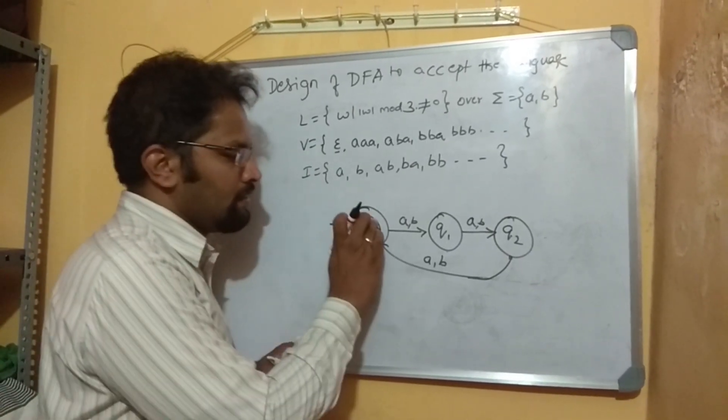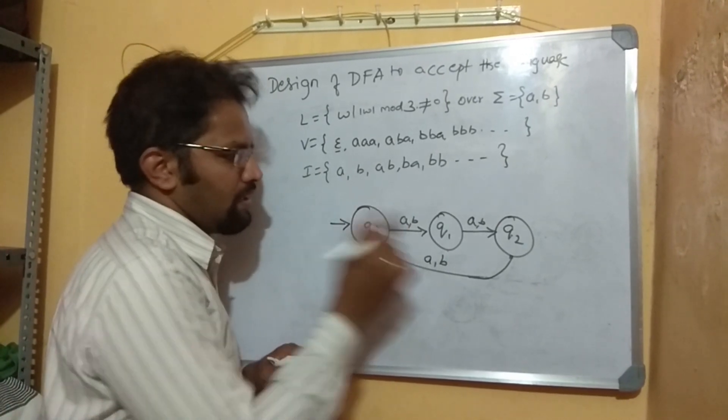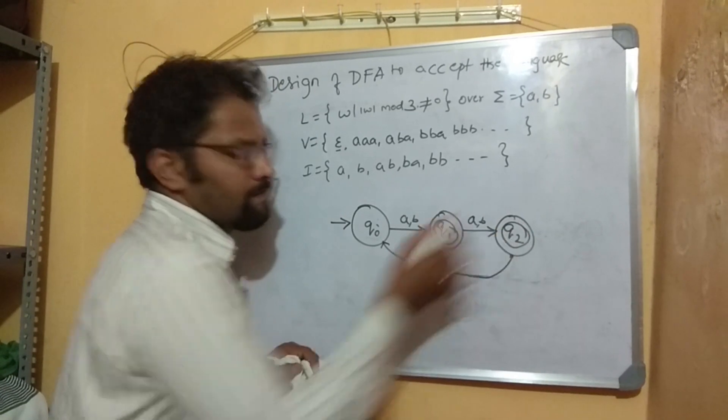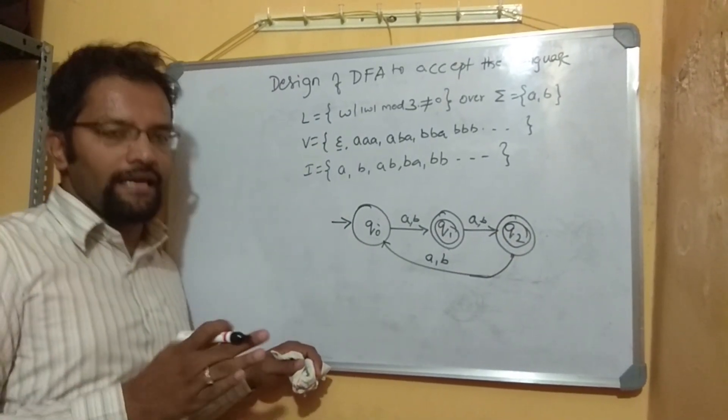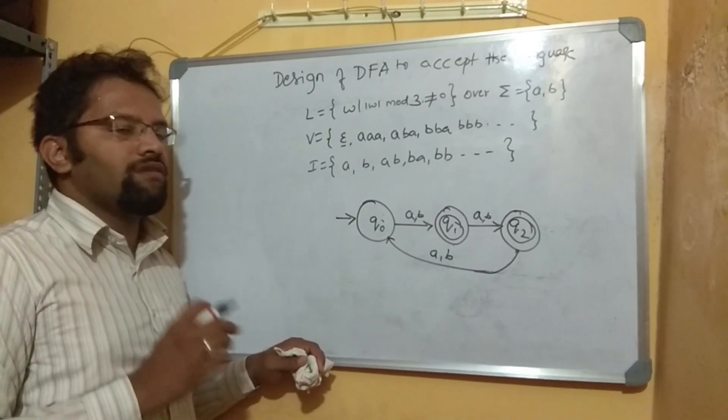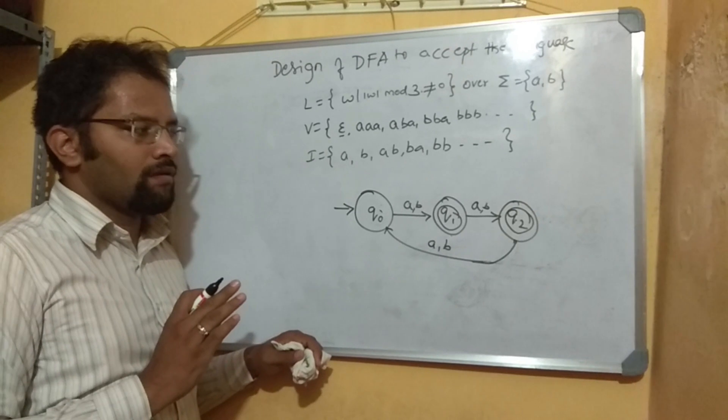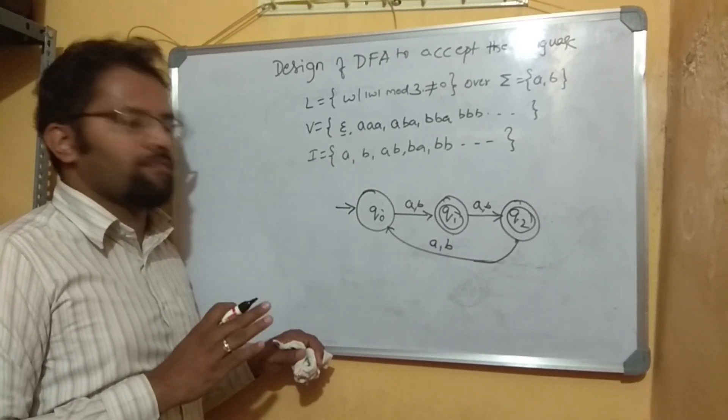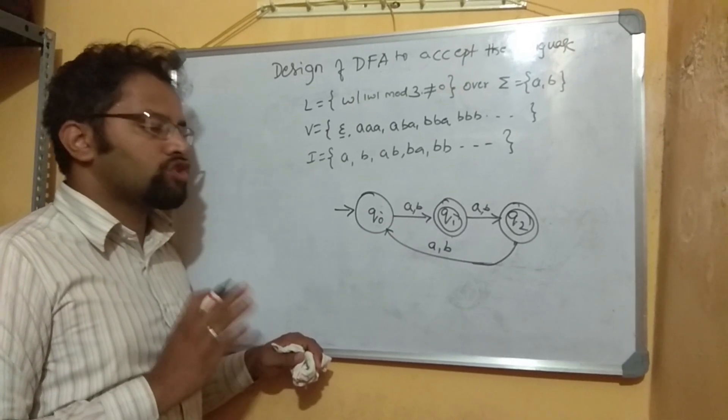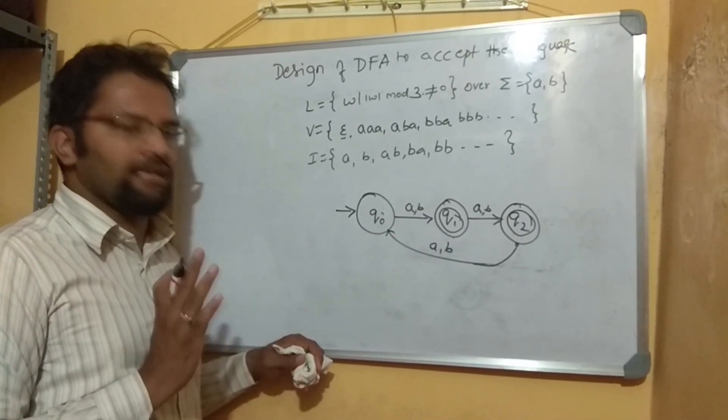If you say number of symbols in W mod 3 not equal to 0, final becomes non-final, non-final becomes final. So then you just remove this and make these two as final states. Ultimately whenever you talk about not, not equal, not ending, not starting, very simple technique is write normally for accept, remove not, write normally, then change all final state to non-final state, non-final state to final state.